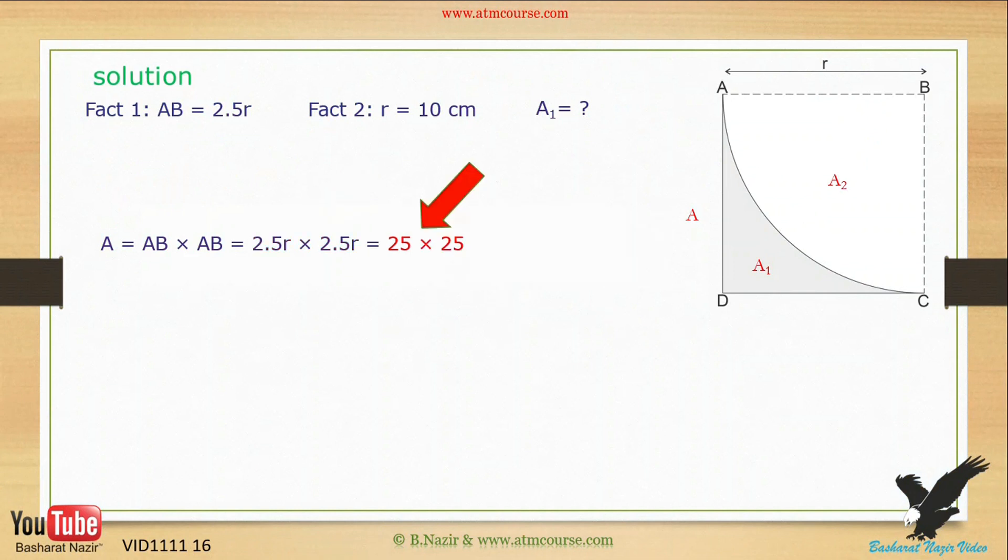Write in the values for the side AB which was given in the question. Next, work out this multiplication. The result for this calculation works out to be 625 square centimeters.